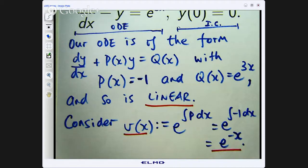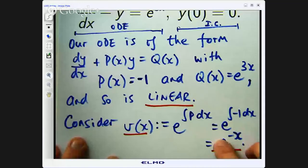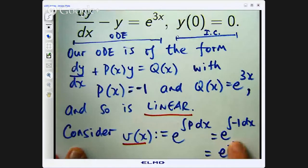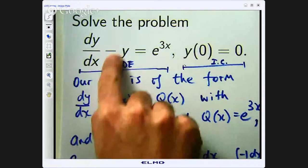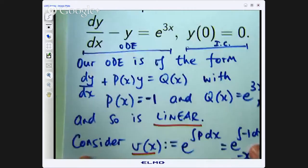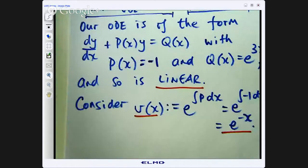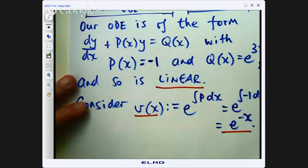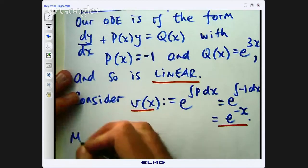So what we are going to do with this magic function is multiply both sides of our original differential equation by that magic function, that integrating factor. So let us do that. Let us take this e to the negative x and multiply both sides by e to the negative x.